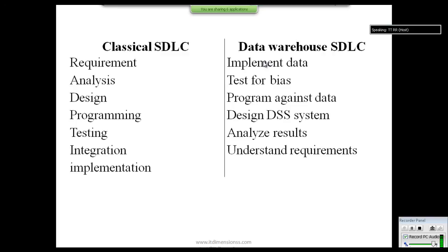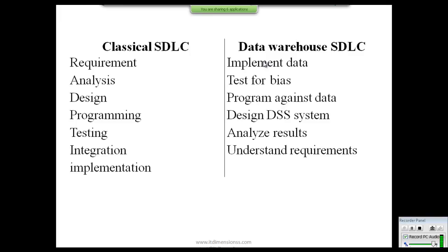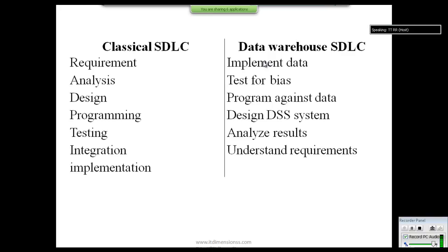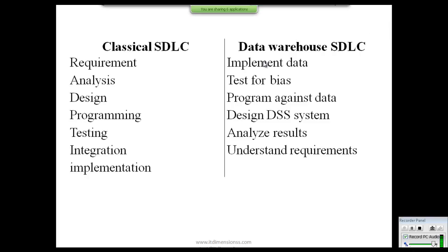But in the case of a data warehouse, things are a little bit different. We already have some data, and upon this data we program — that is, we program against the data. Then by using this data, we develop a DSS system. When this decision support system is made, we will try to analyze the results given by it. Only then can you understand the requirements of the data warehouse system. So this is a totally evolving system. The data warehouse will totally evolve all the time. That is why the data warehouse lifecycle design is different from a classical software lifecycle.